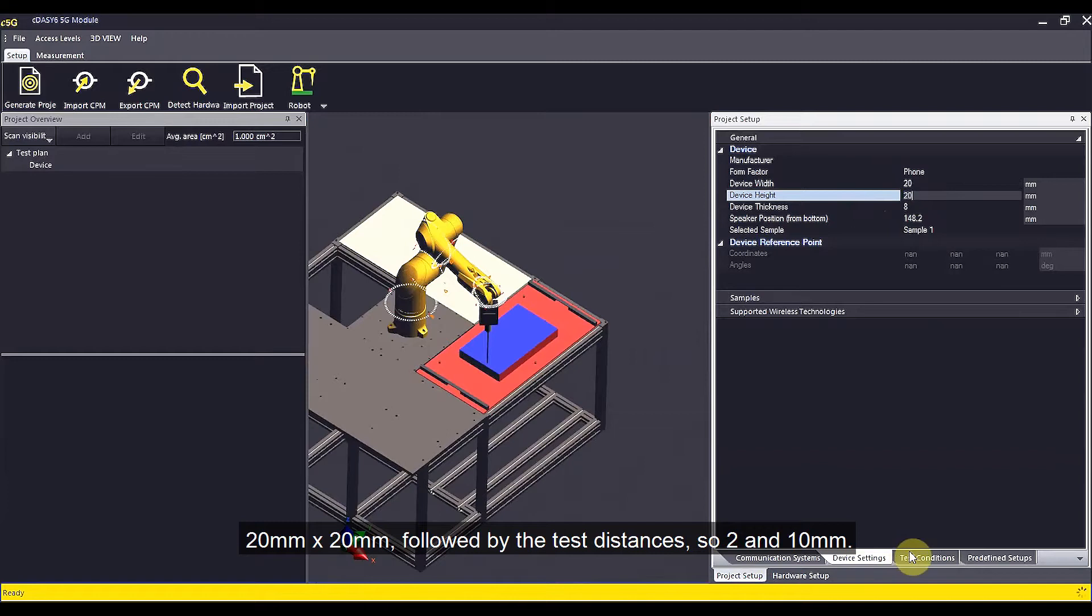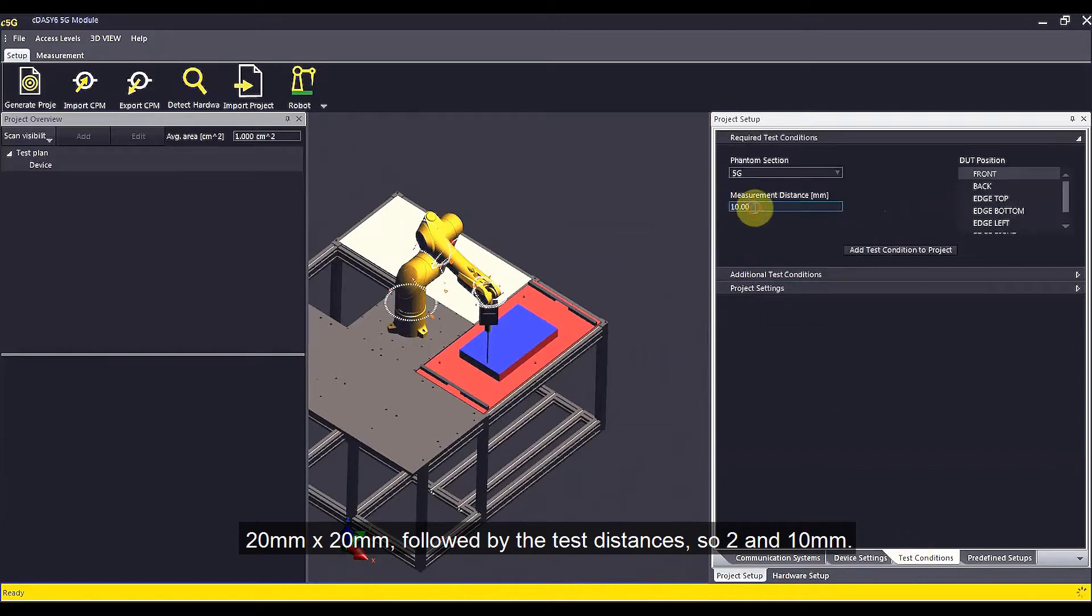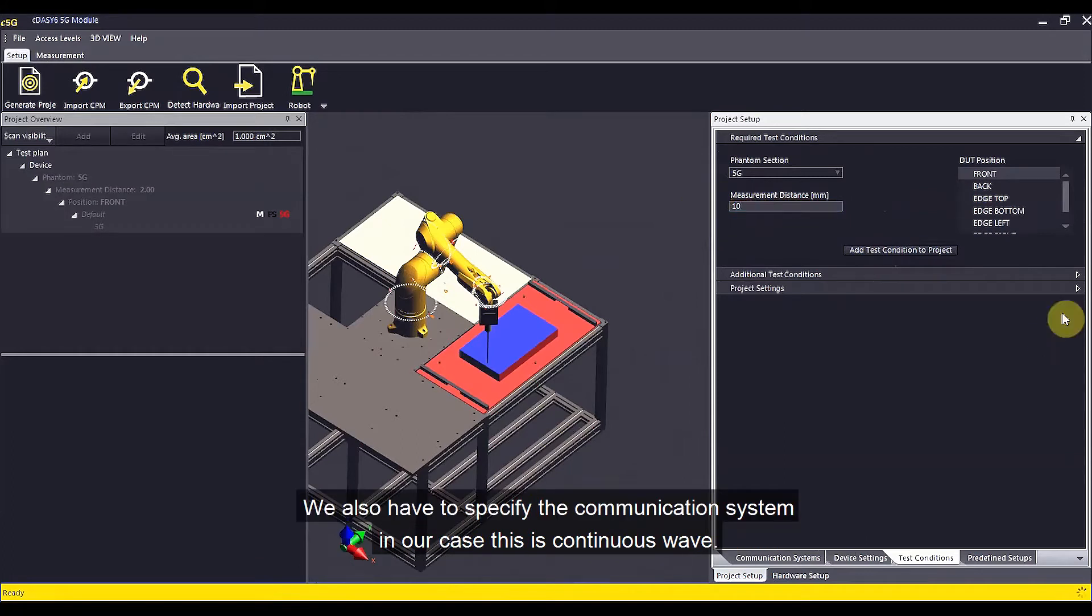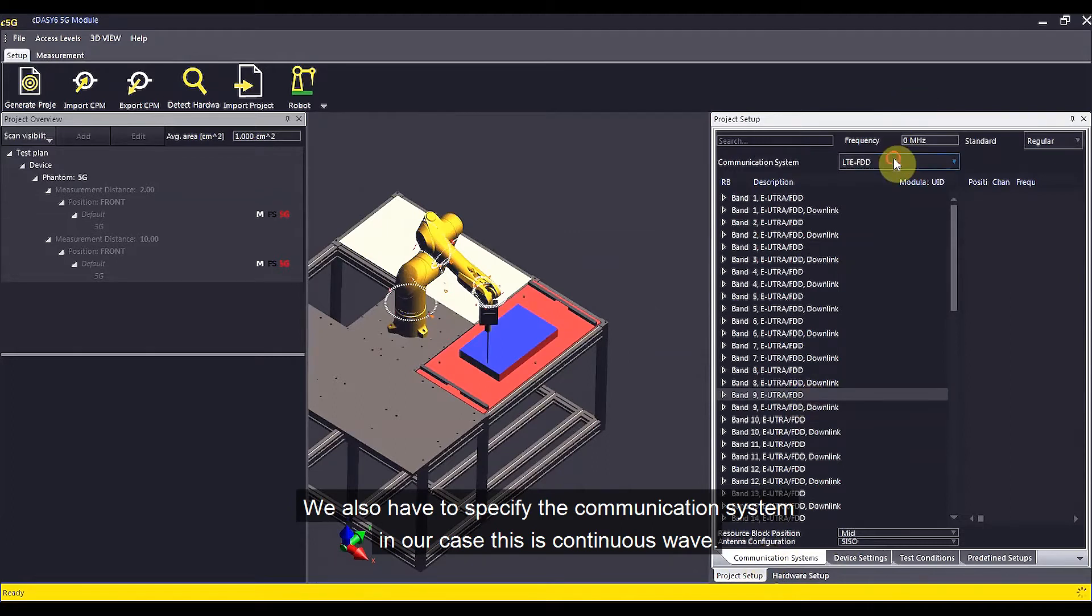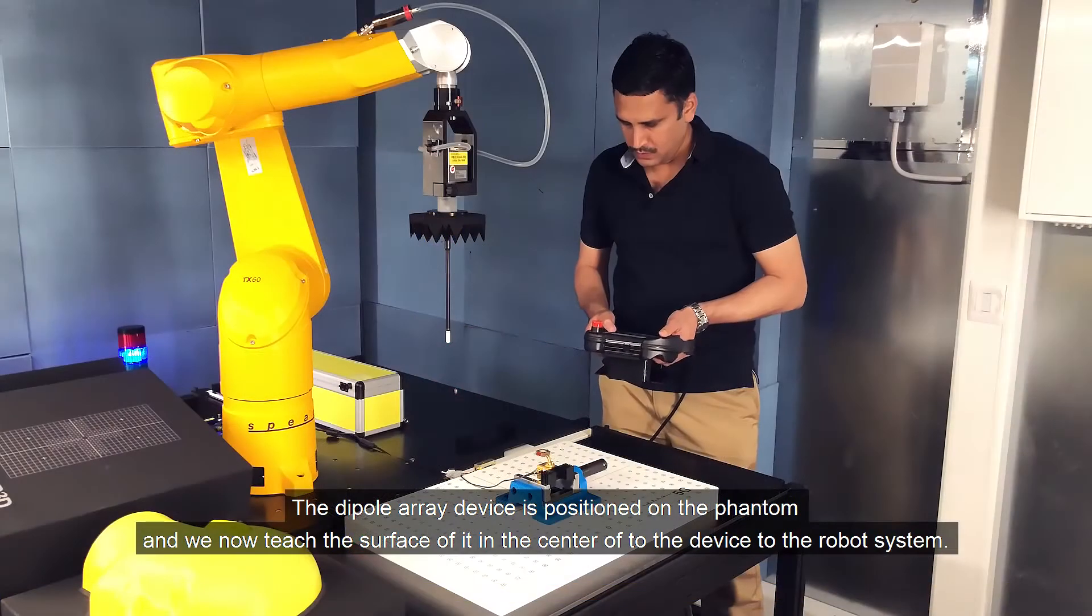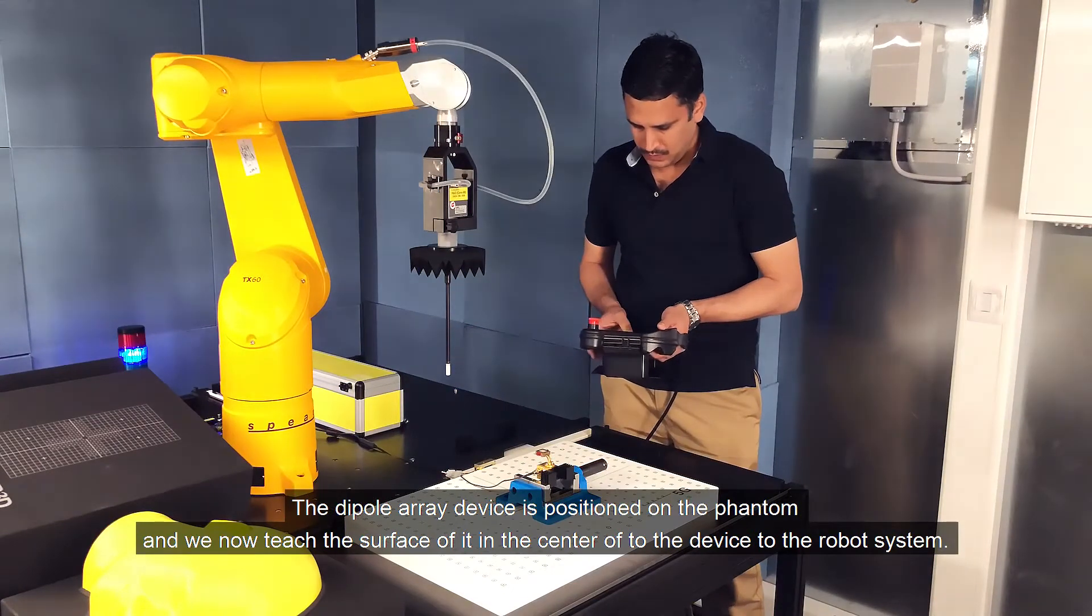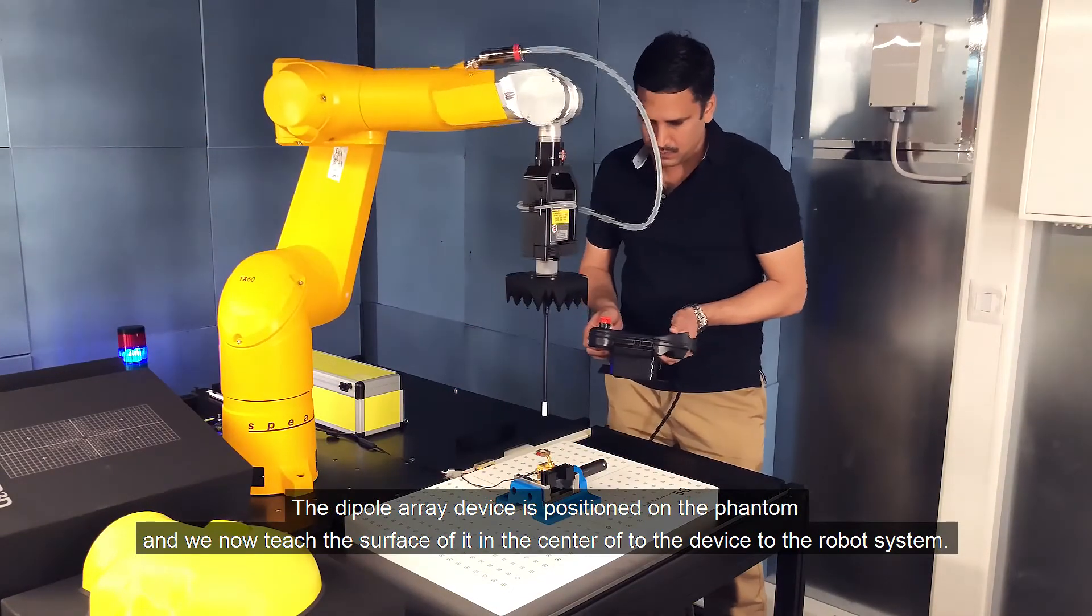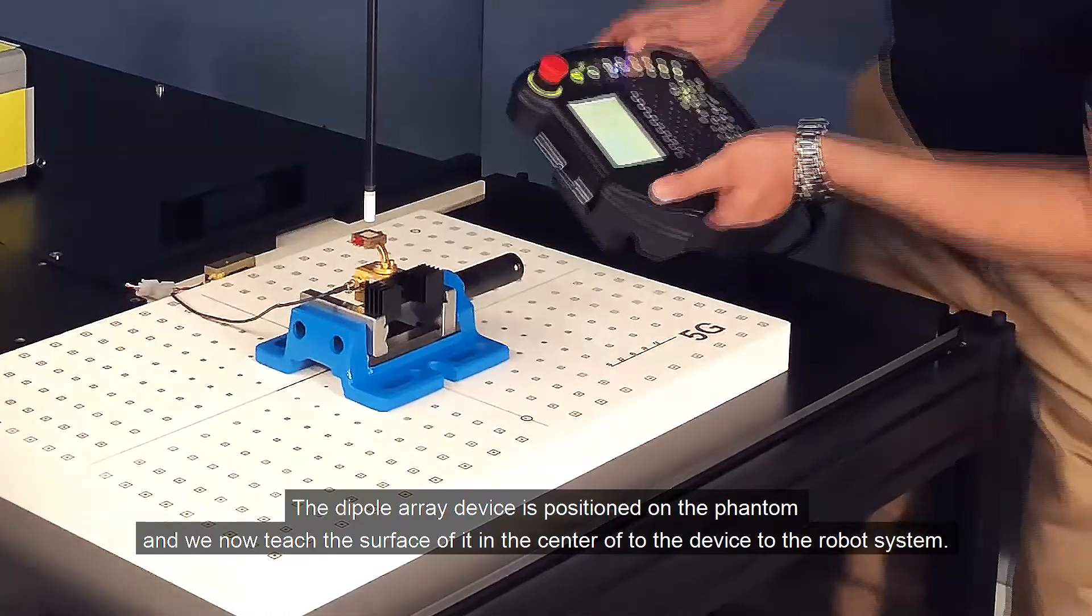Followed by the test distances, 2 and 10 millimeter. We also have to specify the communication system. In this case, it is continuous wave.